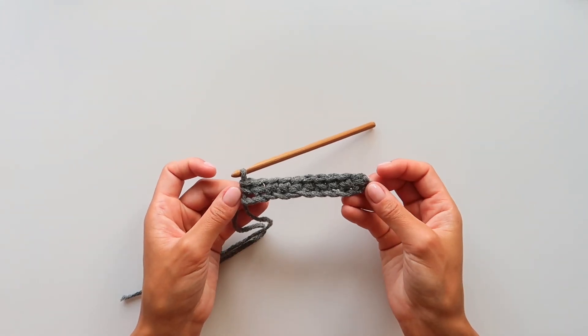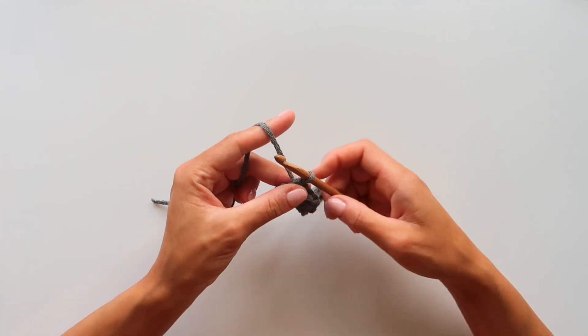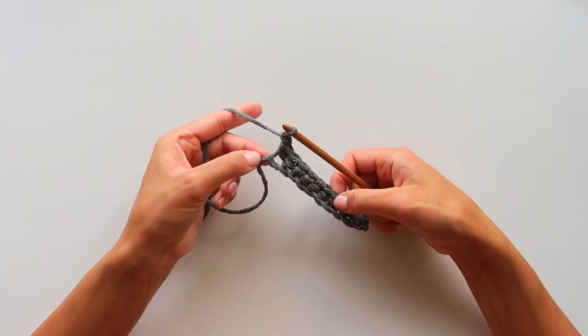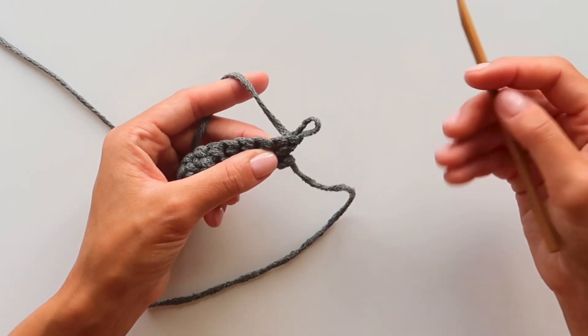And now when we have finished this row, I will show you how to turn our project. So we will chain one and this will work as the first stitch in the second row.